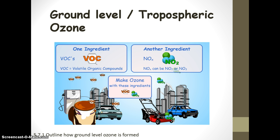VOCs are things you can smell because they're volatile — turning from a liquid into a gas. Examples include petrol, industrial solvents, and paint. You can sense that strong chemical smell around those things.